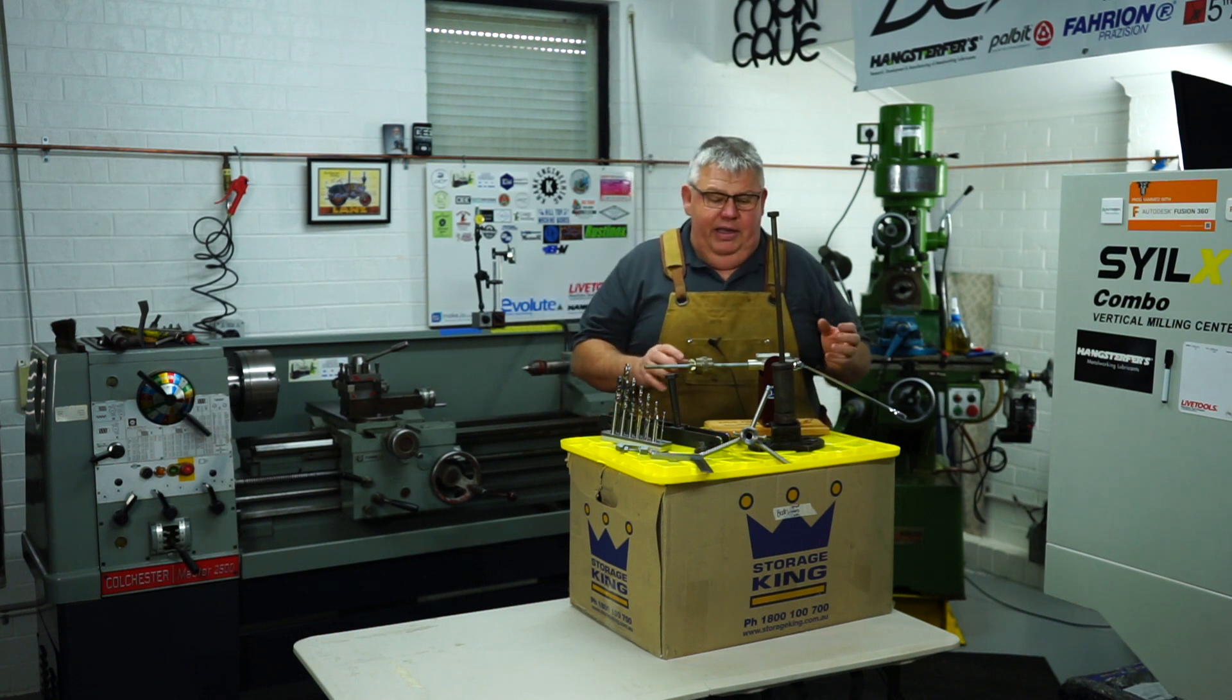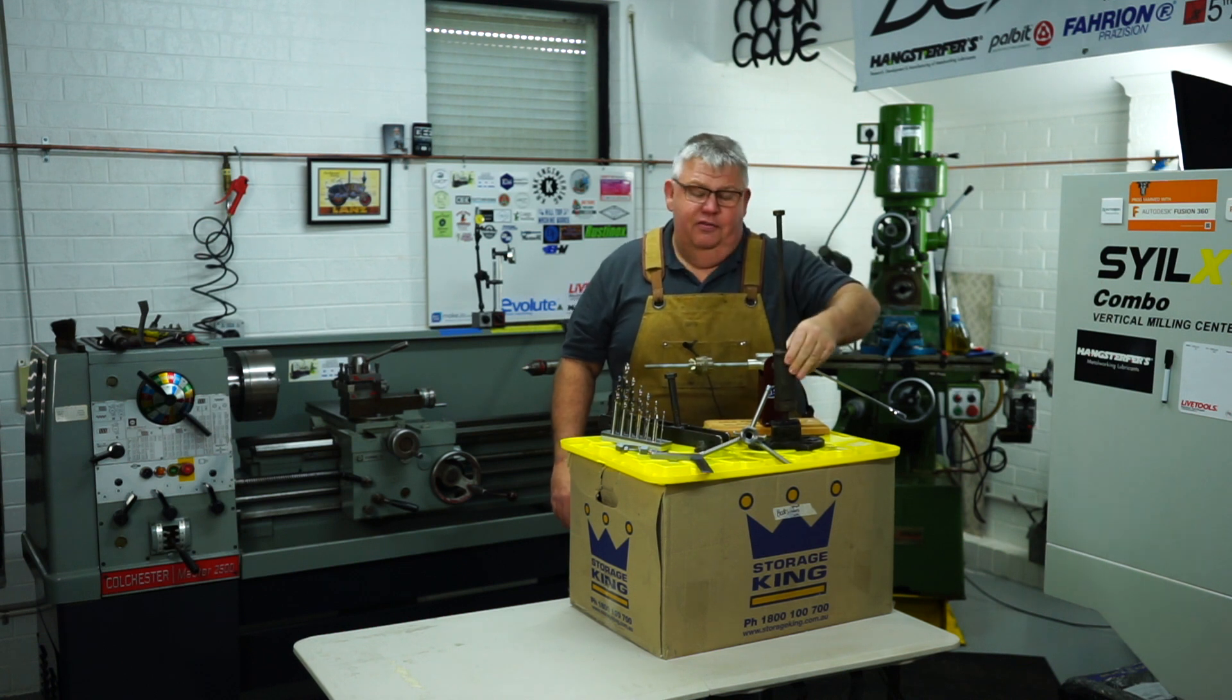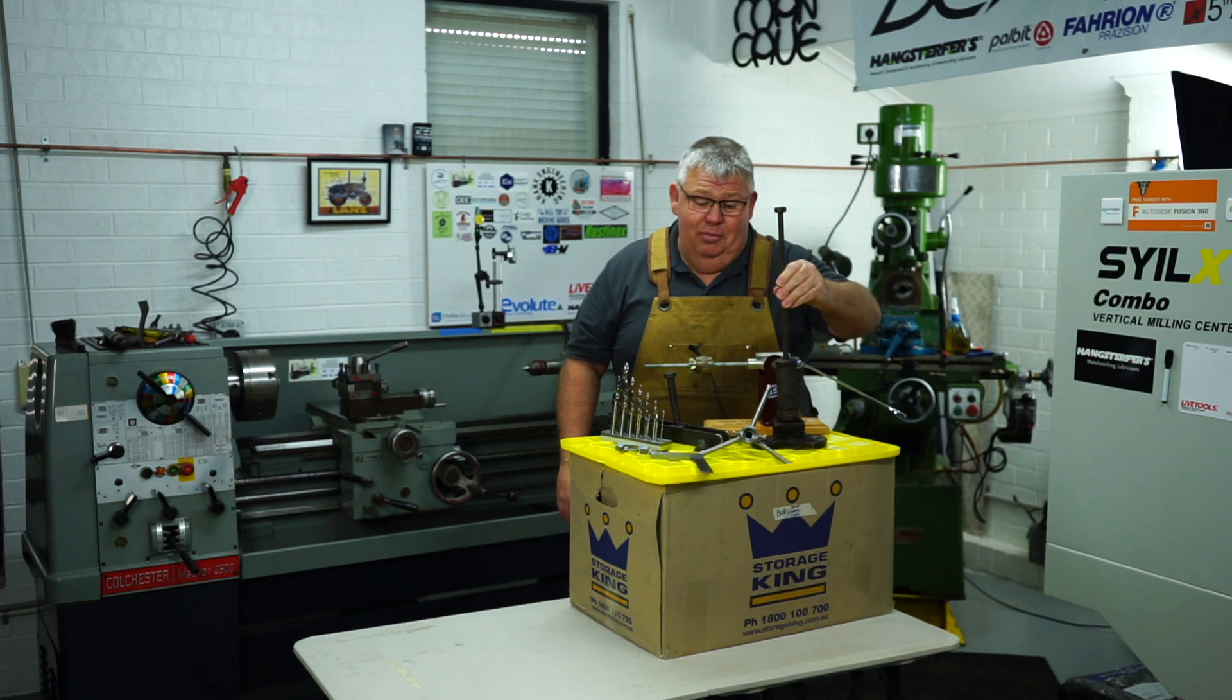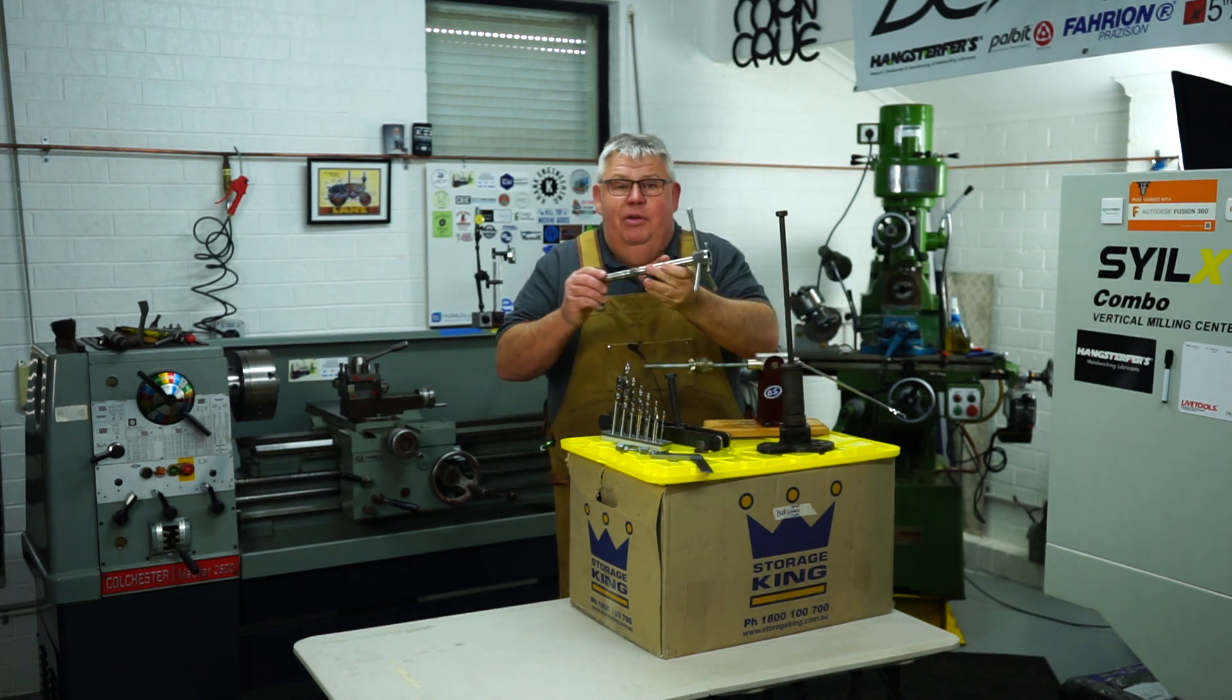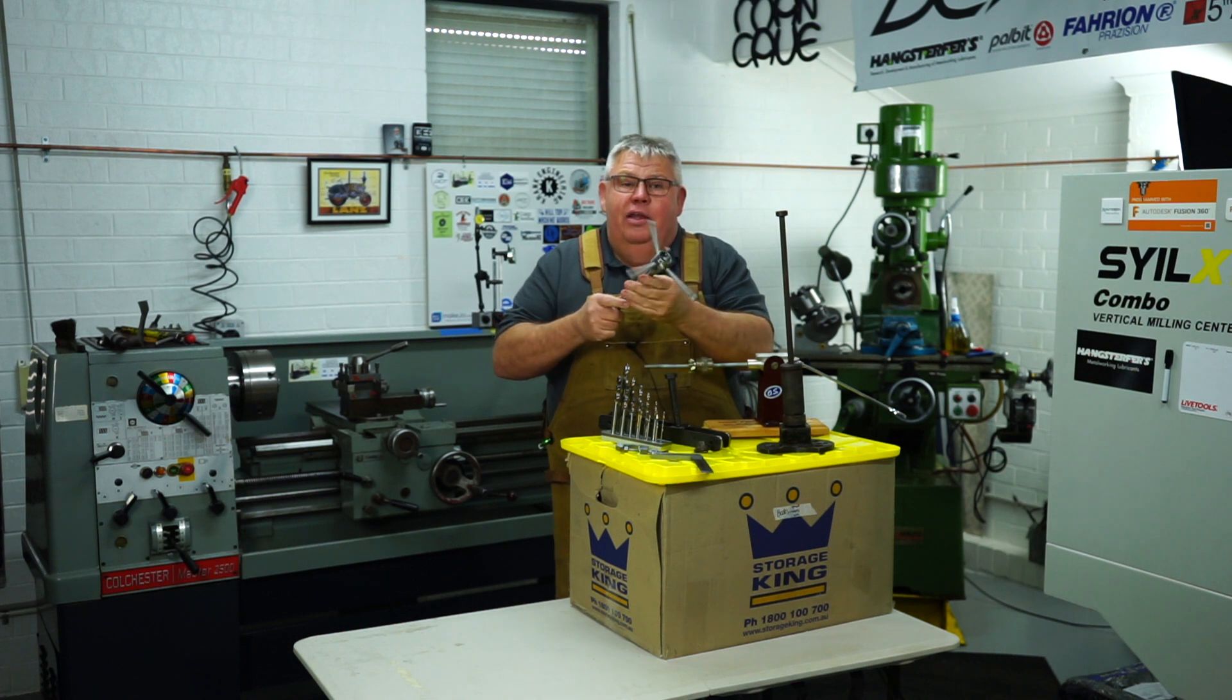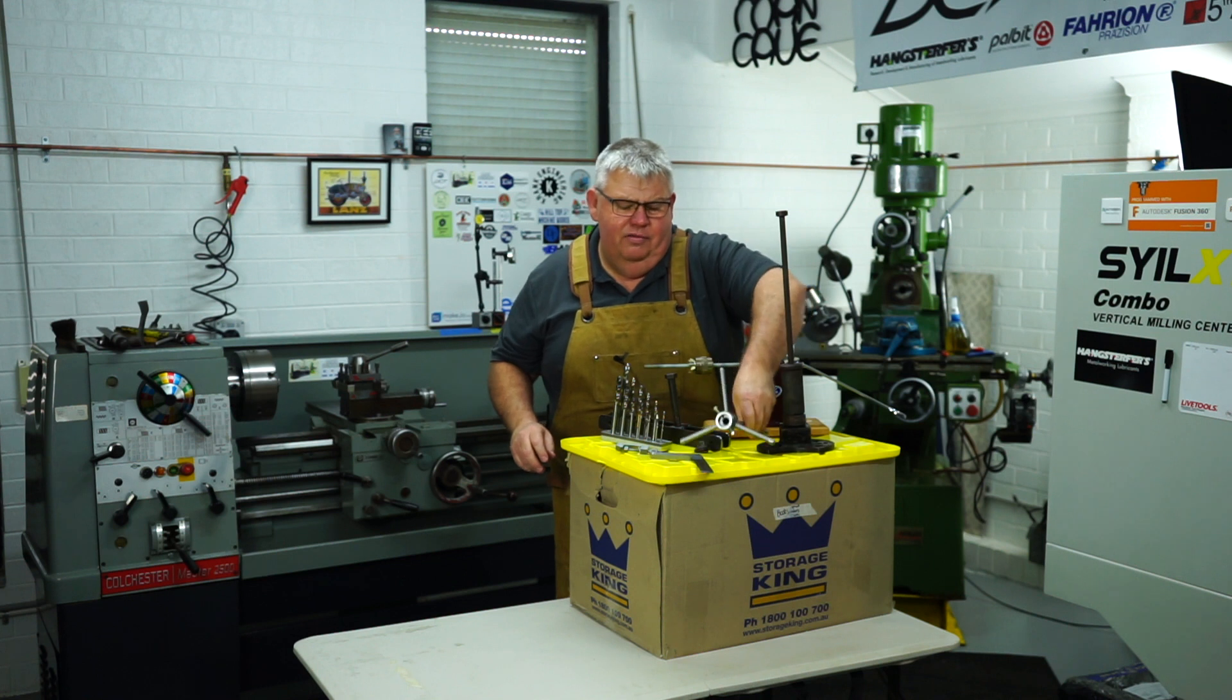Some of these tools I'll be covering today will be an axle puller that I made when I was 16 years of age as a first year apprentice back in 1984, a long time ago. To my little Morse taper 2 button die threading attachment for the lathe, which I made back in probably about 2004, 2005.